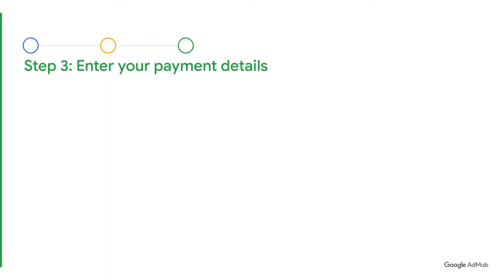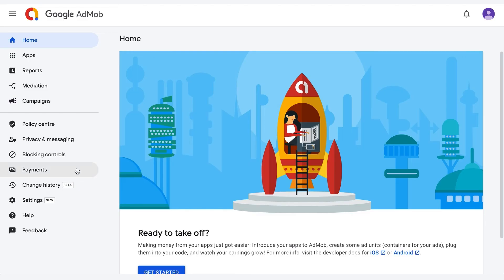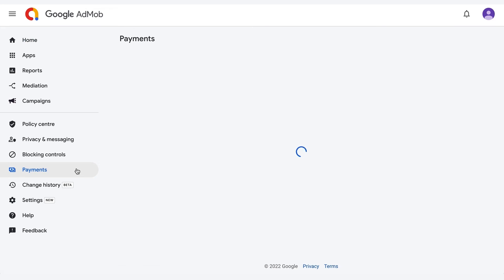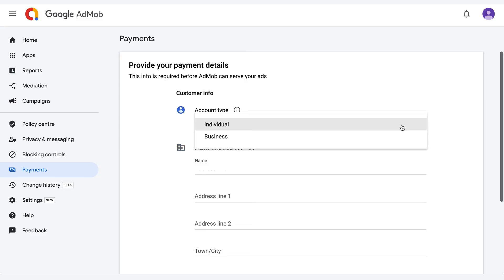Now for the third and final step: enter your payment details. This step is essential for AdMob to verify your account to serve ads and authorize payments. Head to Payments on the sidebar and click Setup Payments. Select the account type that suits you best — Individual or Business.